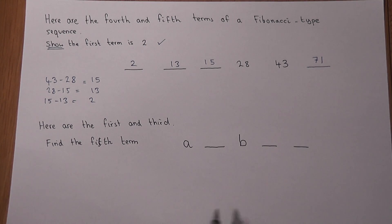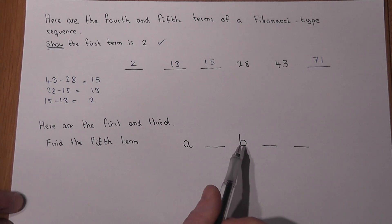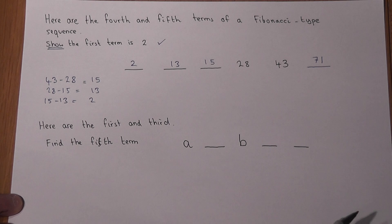Now in the second part of the question, we're given the first and the third, and we're asked to find the fifth term in terms of A and B.